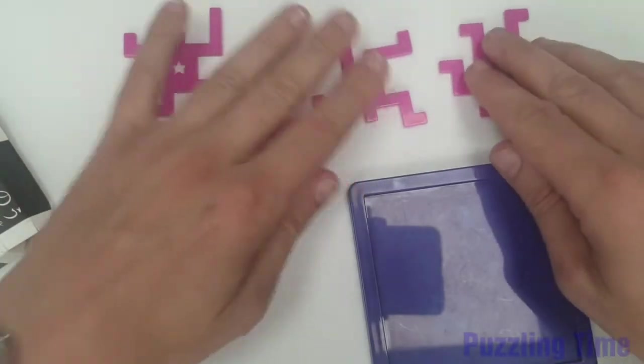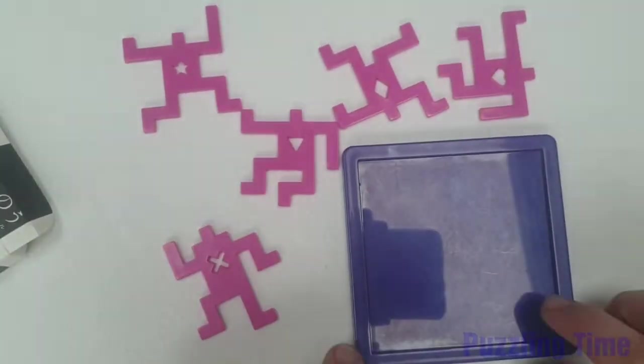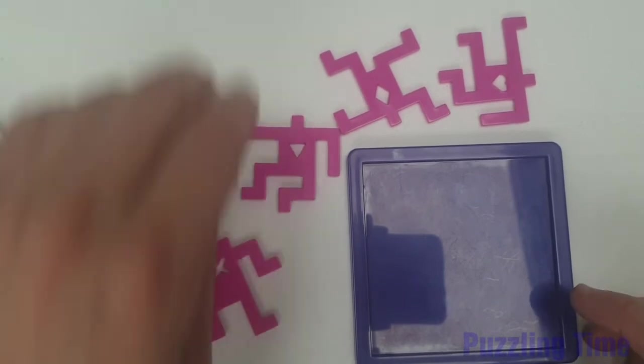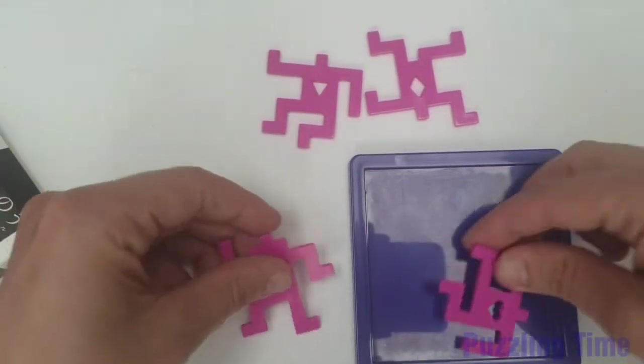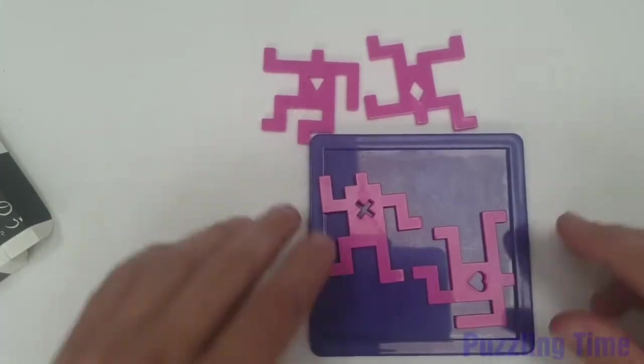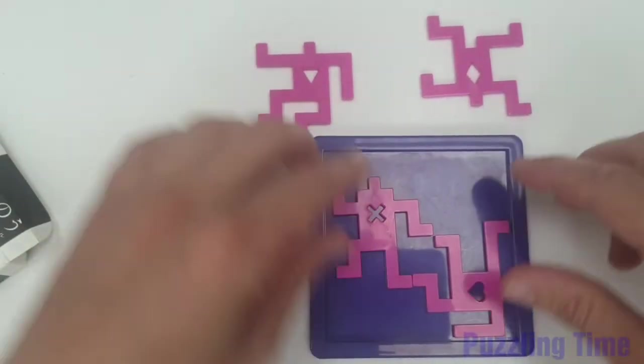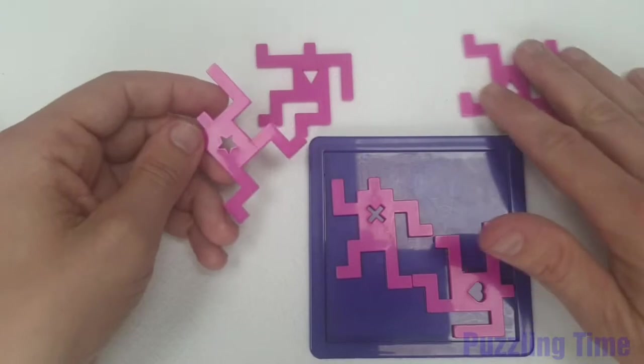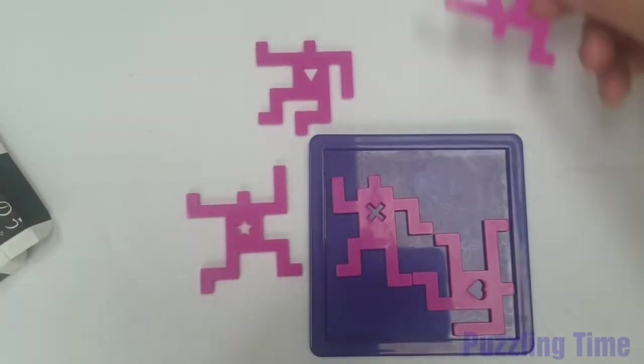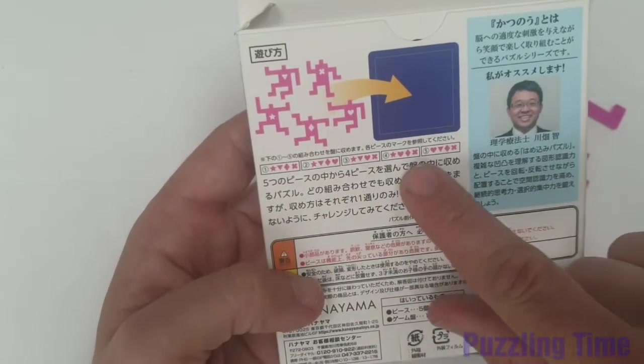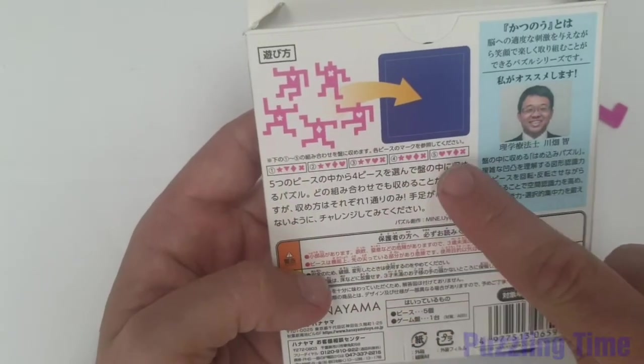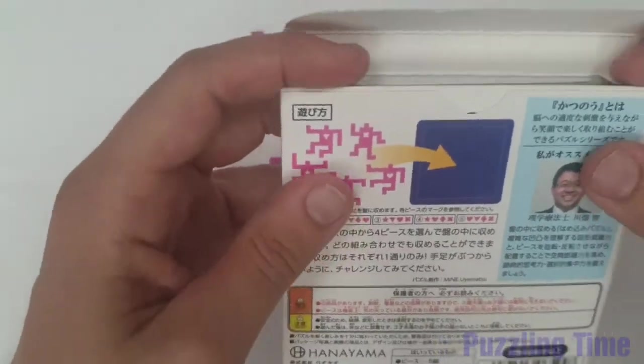Now by removing one of the five pieces, that obviously means that there are five different challenges. I don't know if these are in any particular challenge order. I've solved a couple of them but I haven't solved them all.